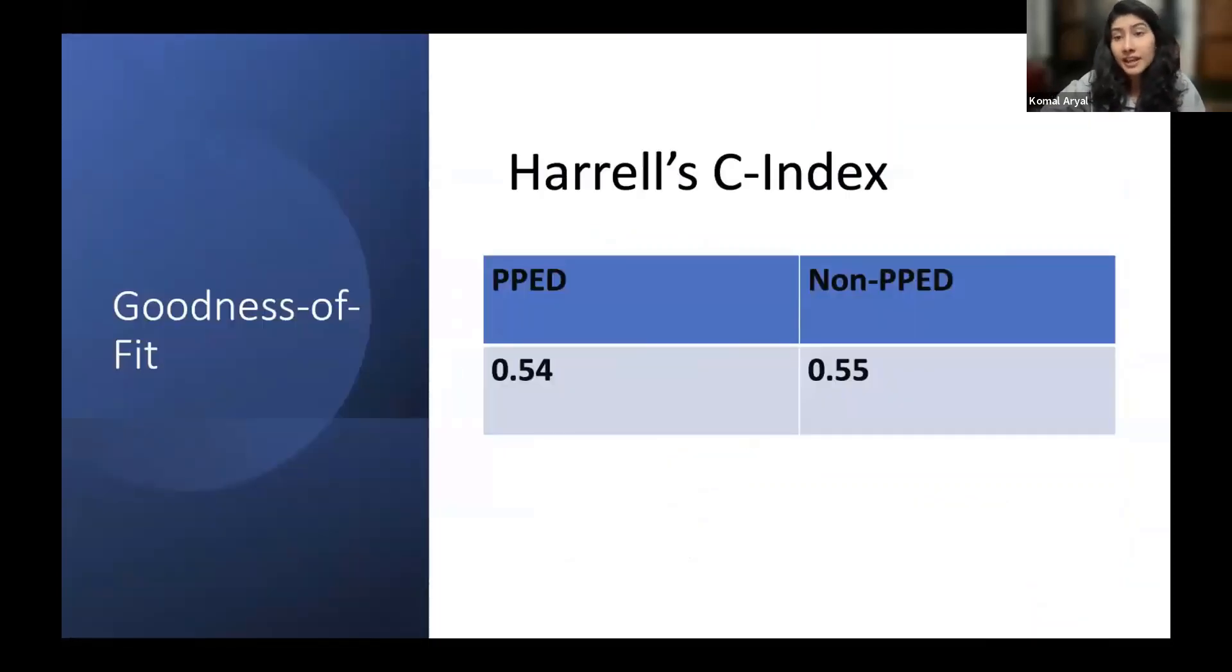Now to understand the goodness of fit, I calculated the Harrell C index to see if there was actually a significant goodness of fit. As you can see, there's very poor discriminability with a PPED of 0.54 and a non-PPED of 0.55.